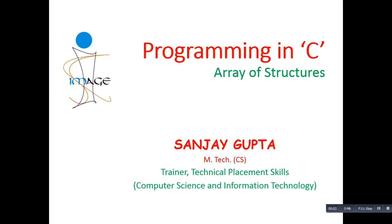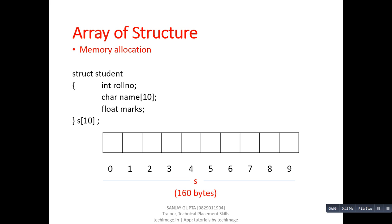Hello friends, I am Sanjay Gupta. In this tutorial I am going to discuss about array of structures. First, take a look at this structure declaration. In this structure declaration we have a total of three members: first is roll number, second is name, and third is marks. The name of this structure is student.